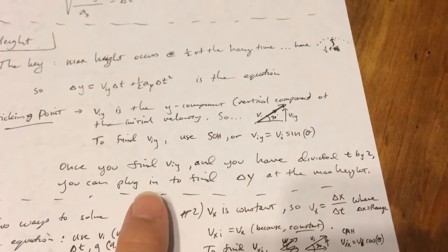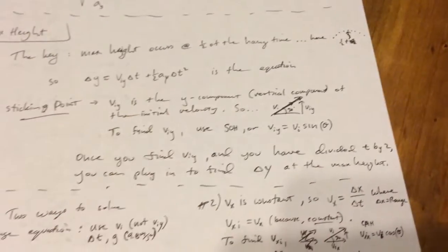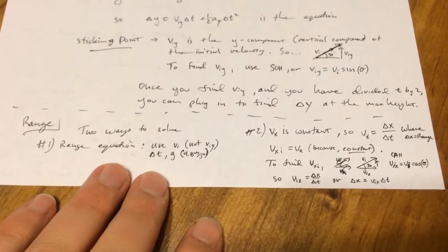Once you find that and you've divided t by 2, you can just plug in to find delta y. Plug in here and that's it. Last question: range.